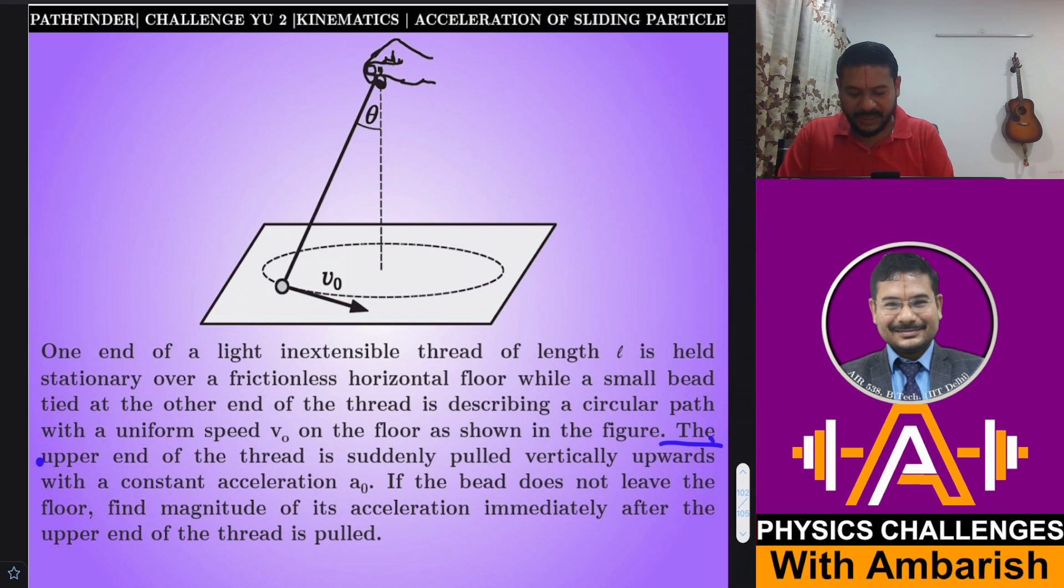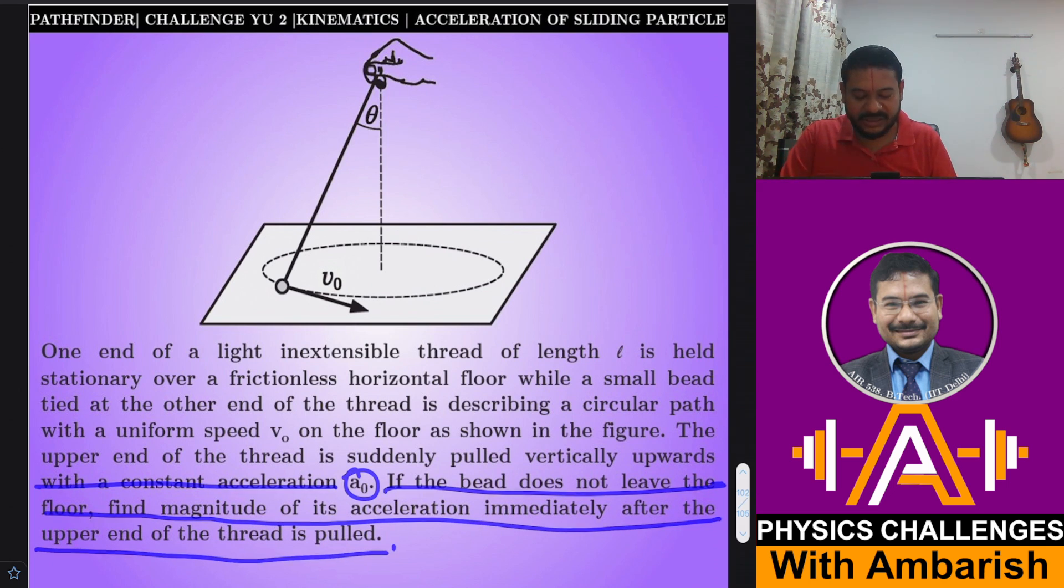The upper end of the thread is suddenly pulled vertically upwards with a constant acceleration A₀, so this is being pulled with an acceleration A₀. Suddenly doesn't make much sense - this doesn't mean we are implying an impulse or something. All it means is we start with zero velocity and then it starts gaining some velocity, so it's being pulled with an acceleration and not any initial velocity. If the bead does not leave the floor, find the magnitude of its acceleration immediately after the upper end of the thread is pulled.